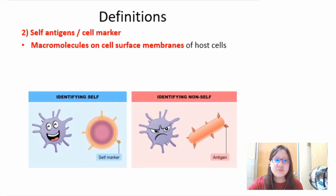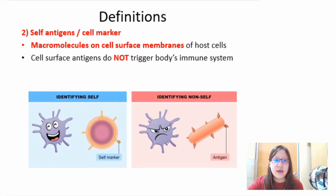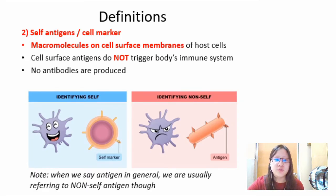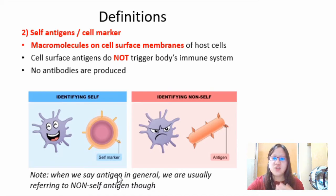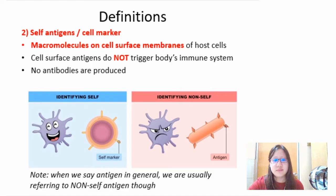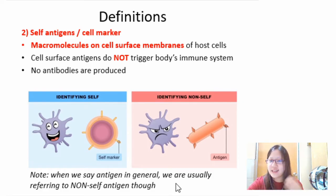The second type is self antigens, also called cell markers. These are macromolecules on the surface membranes of host cells, and they do not trigger the immune system — no antibodies are produced and there is no attack. Note that when we say 'antigen' in general, we are always referring to a non-self antigen; if it is a self antigen, we will explicitly say so.